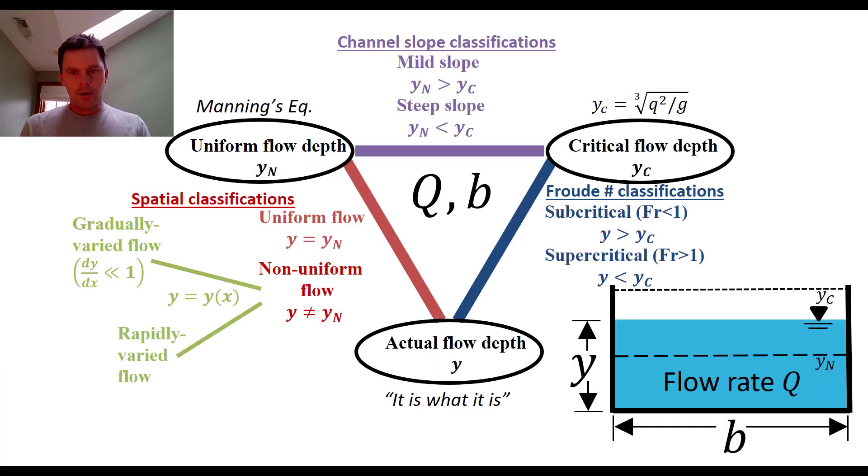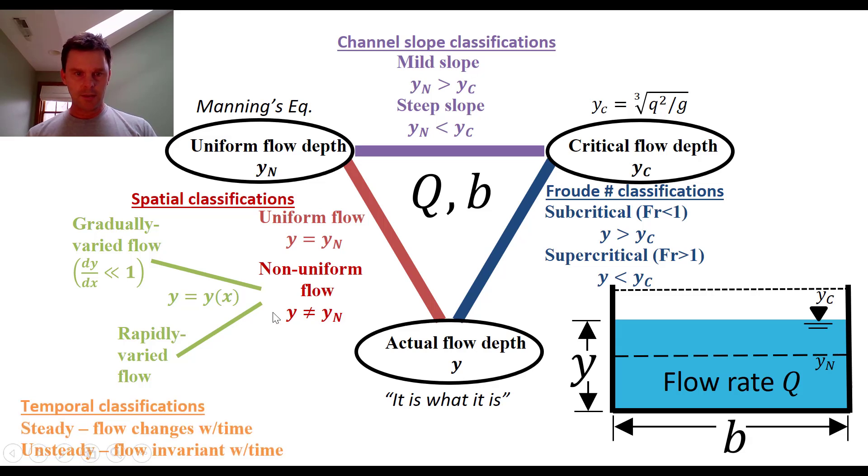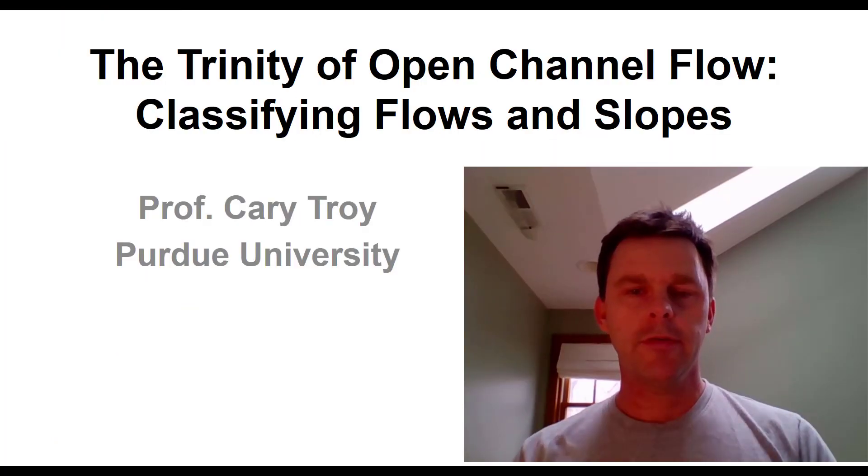All right. Back to our almost complete trinity of classification. So this is the trinity here. The one last thing that we didn't talk at all about, which is kind of implicit in everything we're doing here, is everything with the trinity is related to how the flow is varying in space, either in the vertical direction or in the downstream direction. And on top of that, you have these temporal classifications, which tell us whether the flow is changing in time or not changing in time. Generally, especially in an introductory level for open channel flow, everything is steady. Nothing is changing in time. And we just focus on trying to understand how things are changing in space. And there you have it. The trinity of open channel flow. I hope it's helpful to you. Have a good day.